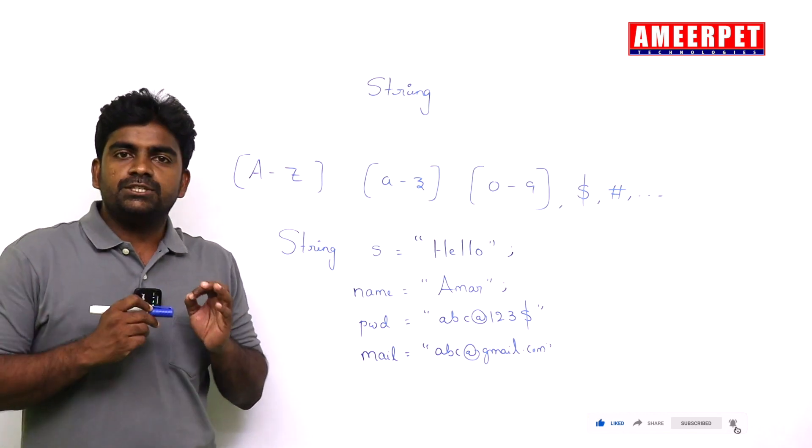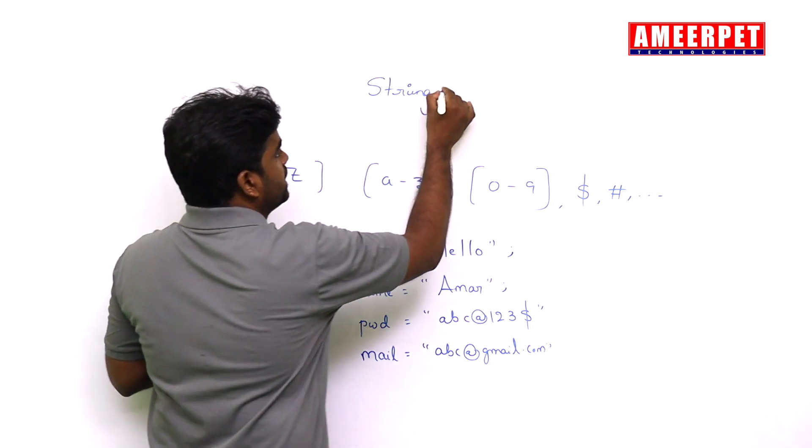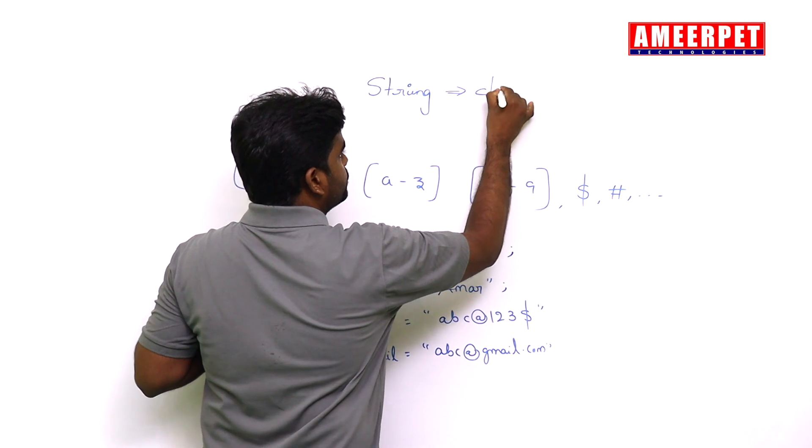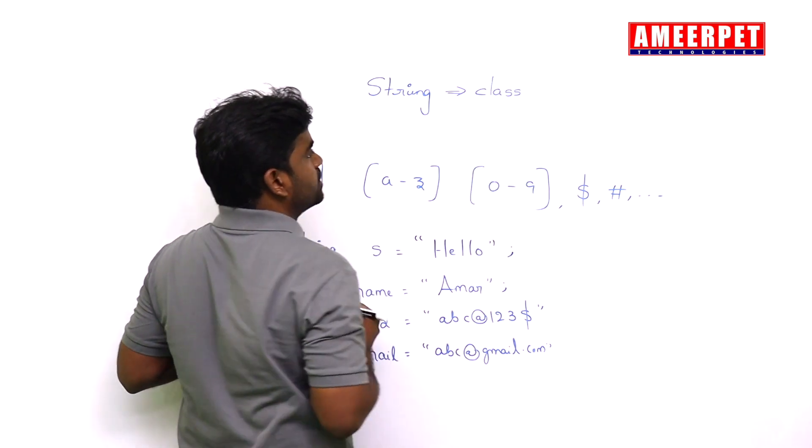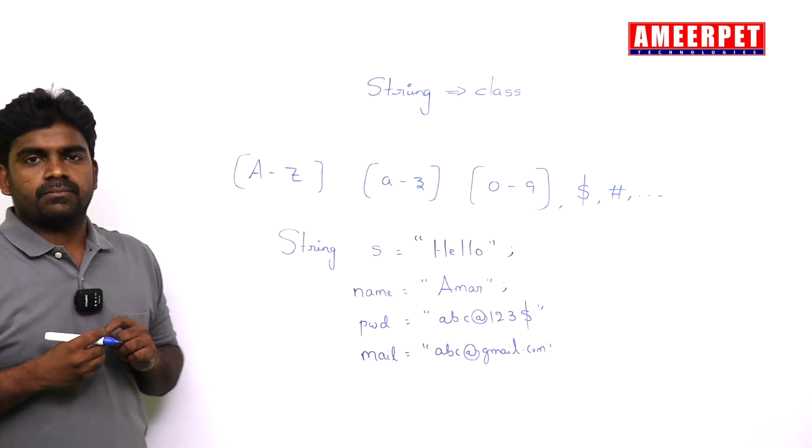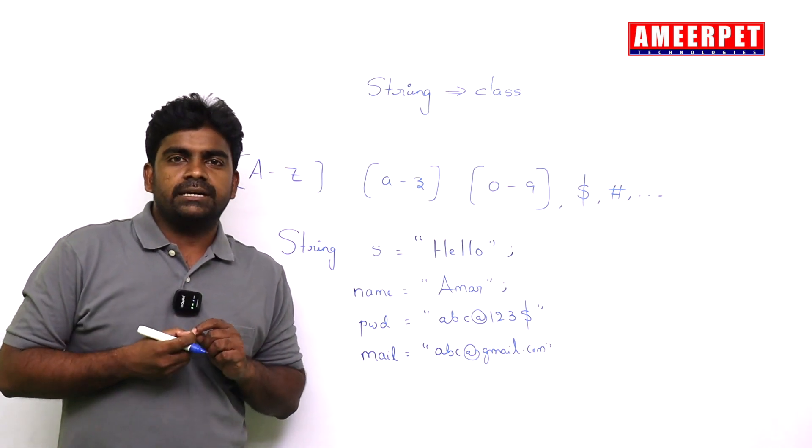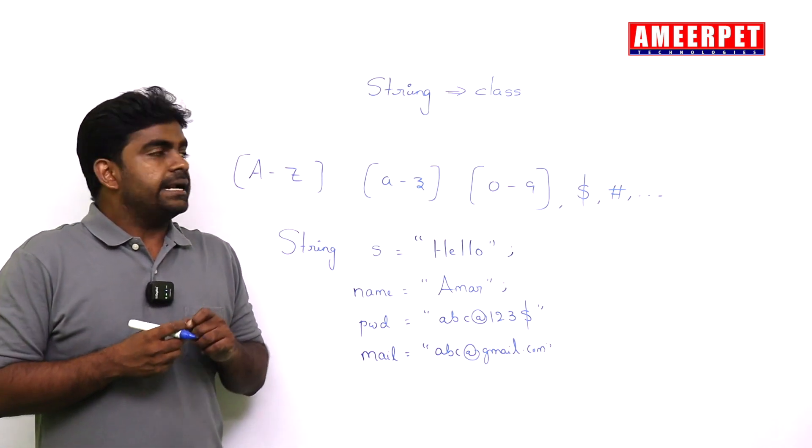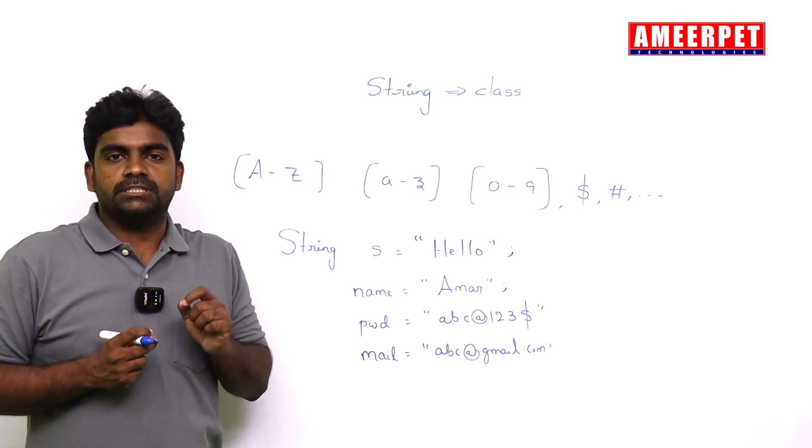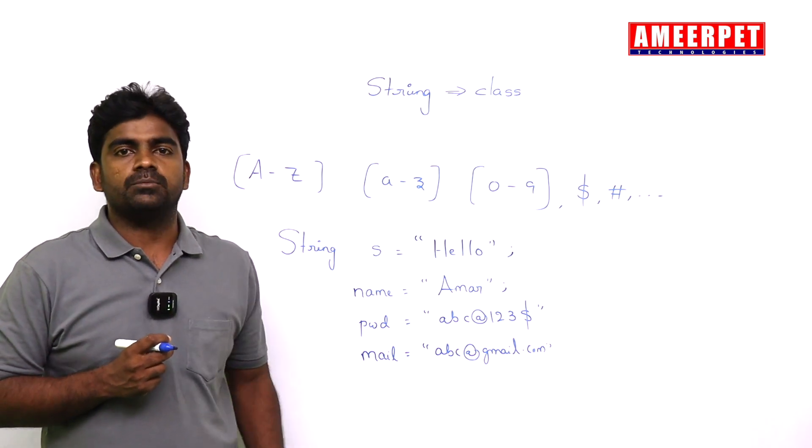And remember, in Java, string is a class. String is a class. So what is class? If you know object-oriented programming, a class is the representation of object. String is an object.